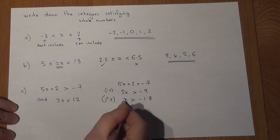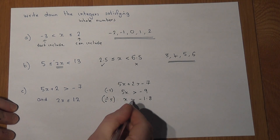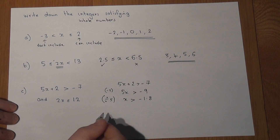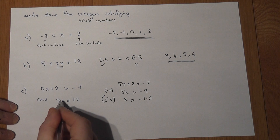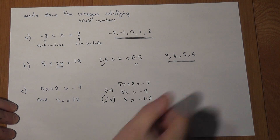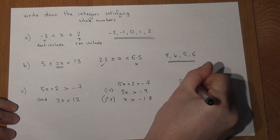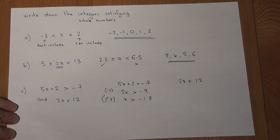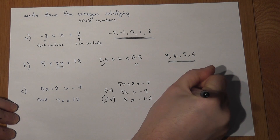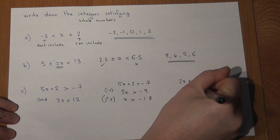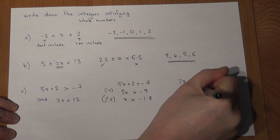So x can be anything bigger than minus 1.8. However, there's a second inequality, which is 2x is less than or equal to 12. If I divide by 2, x is less than or equal to 6.